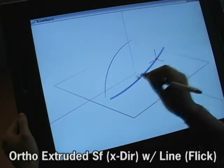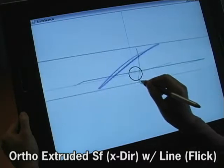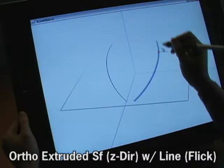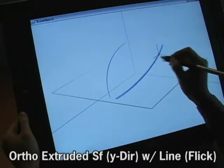The axis-aligned line gesture crossing the axis widget defines one of three orthographically extruded surfaces from the selected 3D curve as a sketch surface.